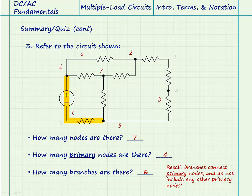Likewise, Branch C connects primary nodes five and one without any other primary nodes, and Branch D connects primary nodes one and seven. Branch E connects primary nodes seven and two. And the last branch, Branch F connects primary nodes five and seven.